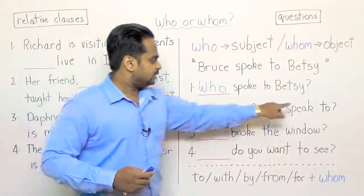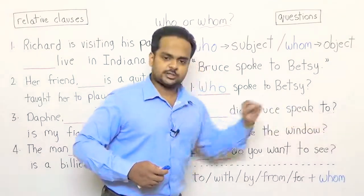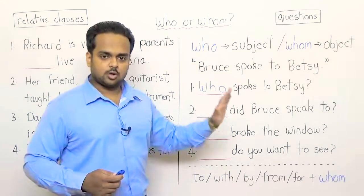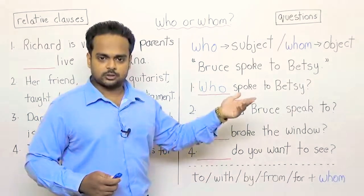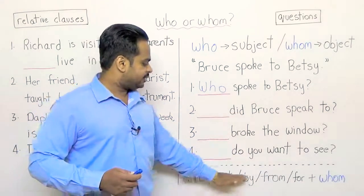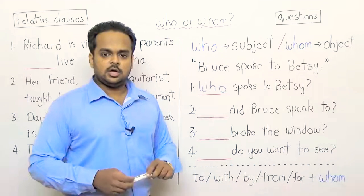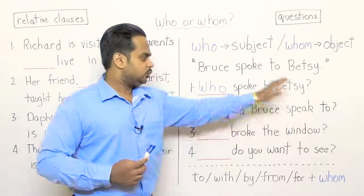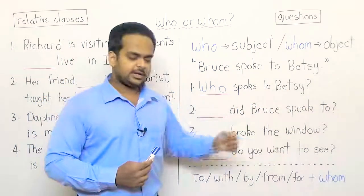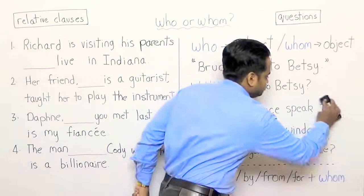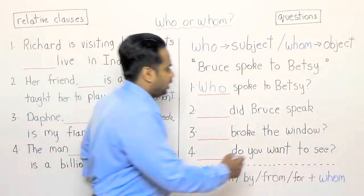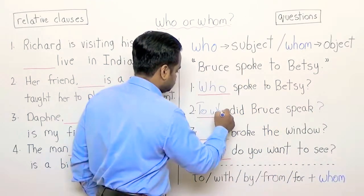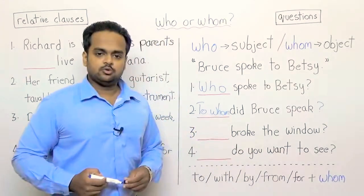Before I write whom, just notice that there is a to at the end of this question. Now in English we have a rule that we don't usually end a question with a preposition like to — these are all prepositions: to, with, by, from, for, etc. So if you have a preposition at the end of the question, you have to bring that to the beginning before you write whom. To whom did Bruce speak? That is actually the proper grammatical form of that question. So if you're writing something formal, this is how you should write it.